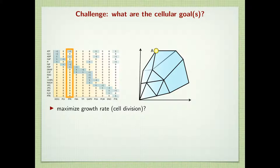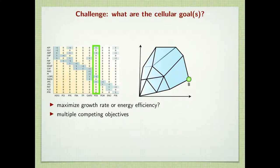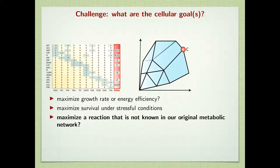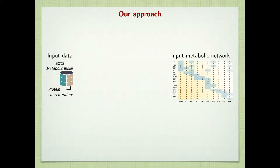Cells can evolve to maximize their growth rate, energy efficiency, or a reaction that cannot be described by the known metabolic network. We address this challenge by developing an algorithm that can learn new reactions from measured fluxes, protein concentrations, and the starting metabolic network.